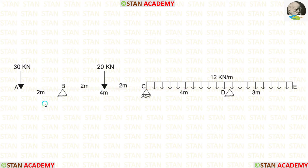Also, there are two overhanging spans. On the left side, we have an overhanging span AB. On the right side, we have an overhanging span DE. So, we have overhanging on both sides.